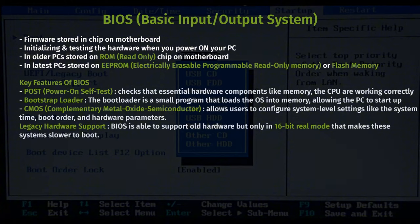Legacy hardware support is another key feature of BIOS. One of the main advantages of BIOS is its ability to support older hardware and operating systems. However, this comes with limitations such as operating in 16-bit real mode, which restricts the amount of memory it can address and makes the system slower to boot.